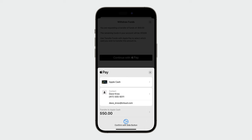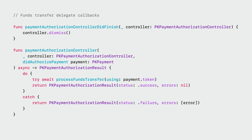As can be seen here, the user is presented with the option to select the payment card they wish to receive the transfer to, and the amount they will receive to that card. Once the user securely authorizes the transfer, there are some delegate callbacks that will need to be implemented to process the transfer. There are only two delegate methods required. The first is PaymentAuthorizationControllerDidFinish, which is called when the sheet is ready to dismiss — the responsibility is on the calling app to dismiss it. You can also use this method to change your app's UI accordingly.